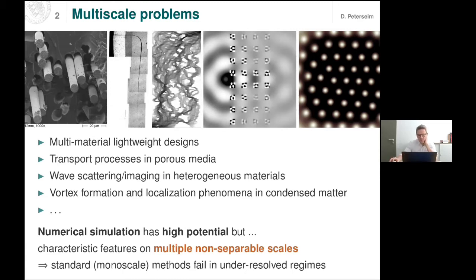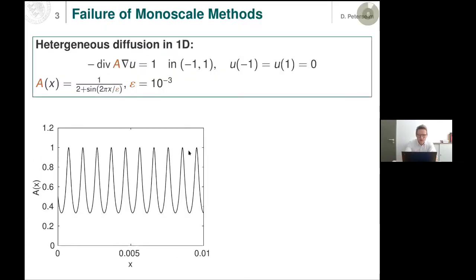The problem originates from the multi-scale nature: one is not able, even with the largest computers, to resolve all aspects of a problem. Standard methods like the finite element method — standard mono-scale methods — tend to fail unless you have resolved all the important features of your problem. The most striking example is this very simple one-dimensional diffusion problem. For students, it's very important to see the effect of a microscopic coefficient in the simplest possible situation: a diffusion problem in 1D.